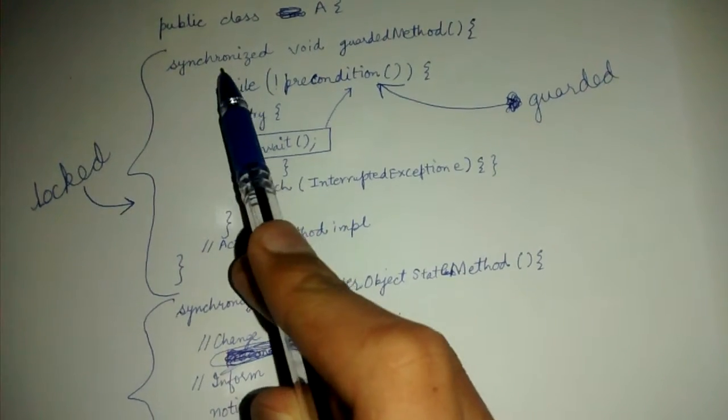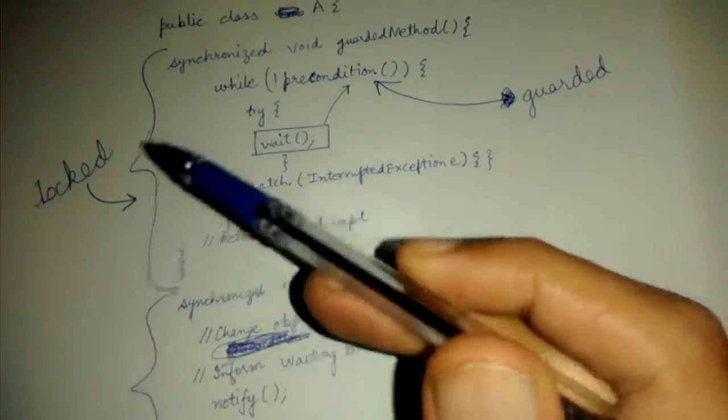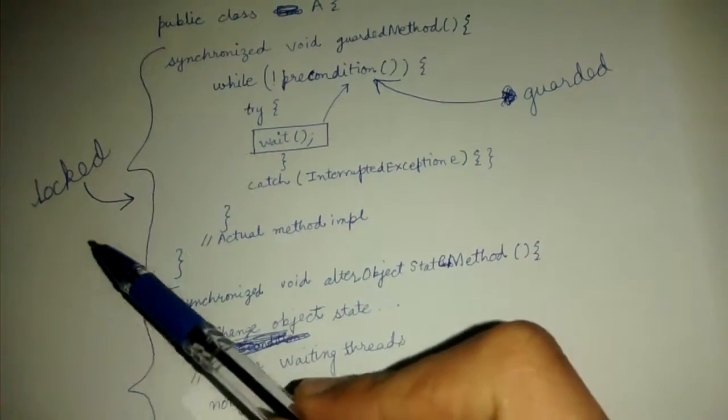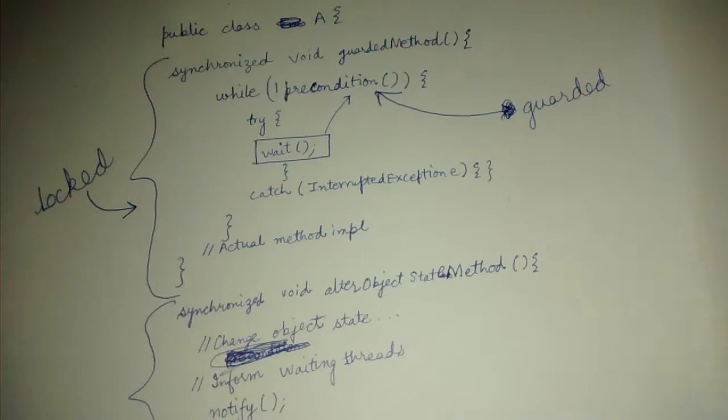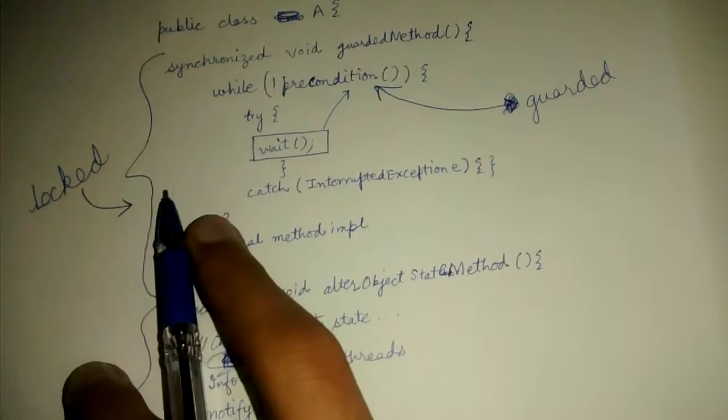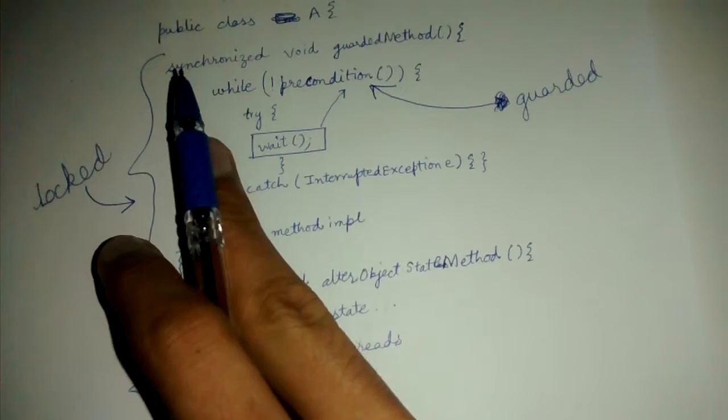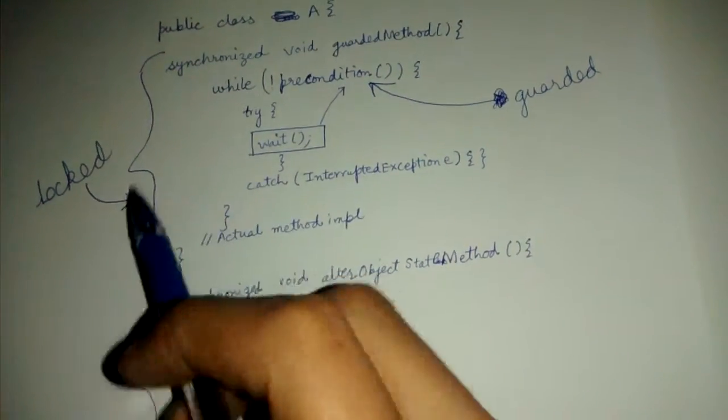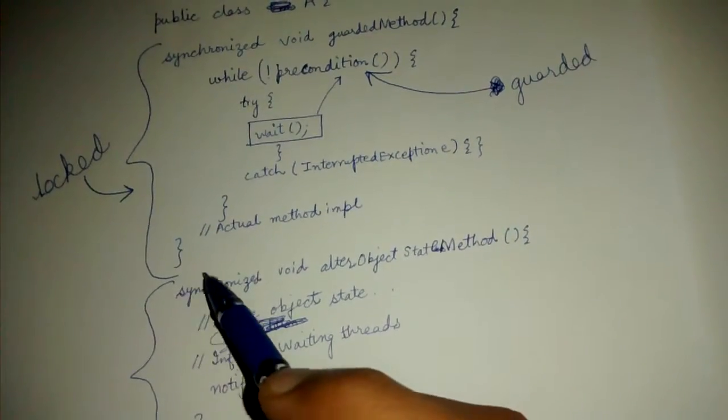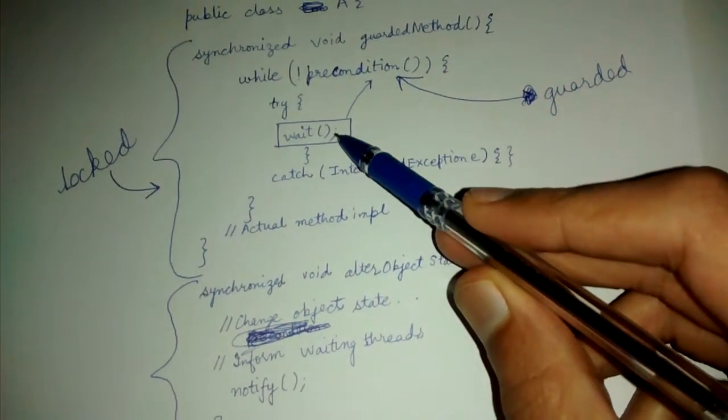This is a synchronized method. As you know, out of two synchronized methods, only one can be called at a time on an object by multiple threads. So if there are two threads and they are operating on the same object, then they can call at most one synchronized method at a time.